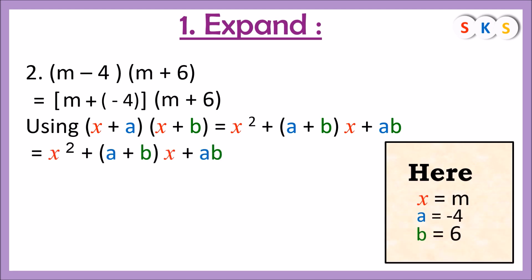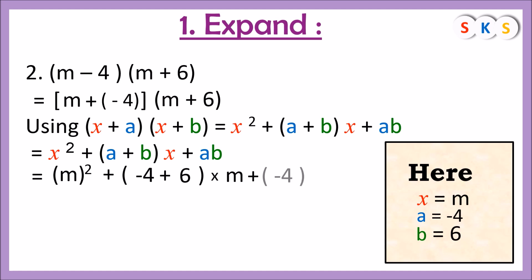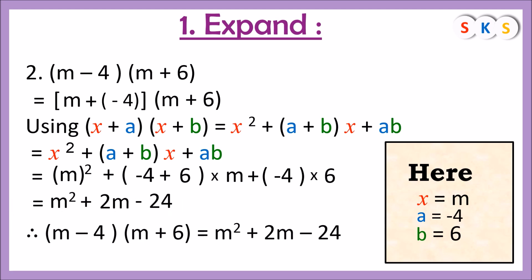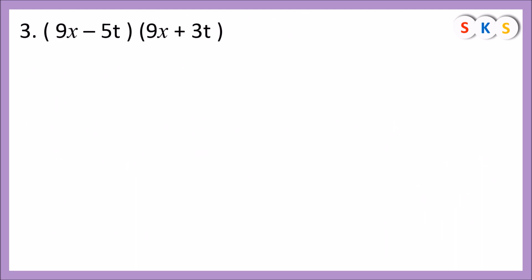We replace x by m: m² + (a + b) × m + ab. Here a = −4 and b = 6, so a + b = −4 + 6 = 2, giving 2m. And ab = −4 × 6 = −24. Therefore (m − 4)(m + 6) = m² + 2m − 24.